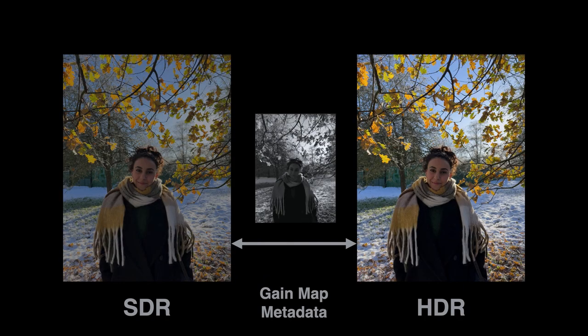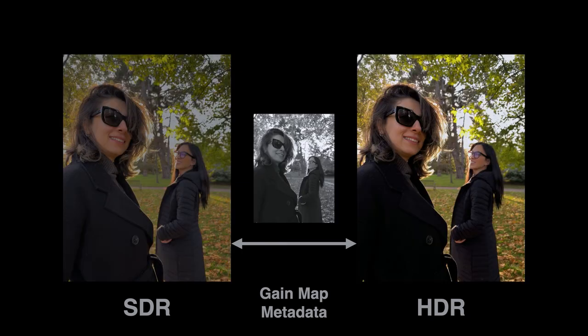These methods are particularly important in the mobile world where phones, tablets, and laptops are used in all kinds of viewing conditions and display brightness is changing constantly. These quotient gain maps are a way of encoding the difference between SDR and HDR renditions and the means of interpolating between them.